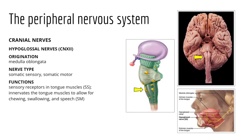Cranial nerve twelve is the hypoglossal nerve. It extends from the medulla oblongata and exits via the hypoglossal canal to serve the tongue. Like cranial nerve eleven, it is primarily motor-based, innervating both extrinsic and intrinsic muscles of the tongue to contribute to swallowing and speech. However, it also conveys proprioceptor information about the tongue back to the brain, so this too should be considered a mixed nerve.